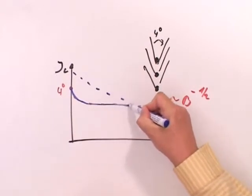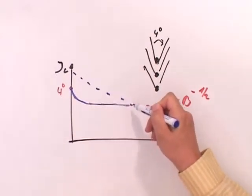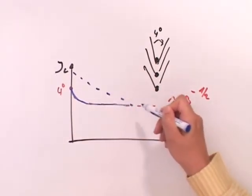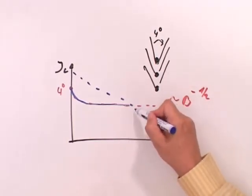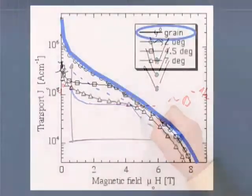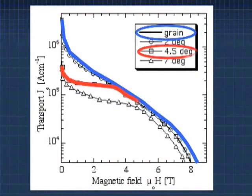Up to the point where one observes this crossover. Above this point at higher magnetic fields, the grain itself acts as a limiting mechanism and reduces JC.